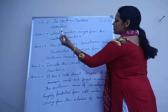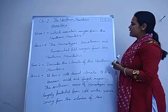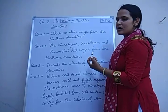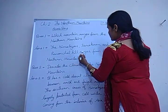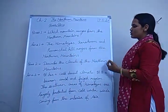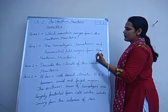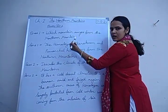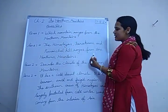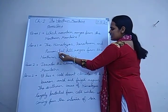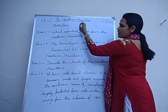The first question is: which mountain ranges form the northern mountains? The answer is the Himalayas, Karakoram, and Purwanchal hill ranges form the northern mountains. The Himalayas are in the north, Karakoram is in the northwest of the Himalayas, and Purwanchal hill ranges are on the eastern side. These three ranges consist of the northern mountains.